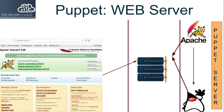As we know, Puppet is all about modules, classes, resources and manifests. So you have to plan what classes or resources you require to build a Tomcat web server through Puppet.